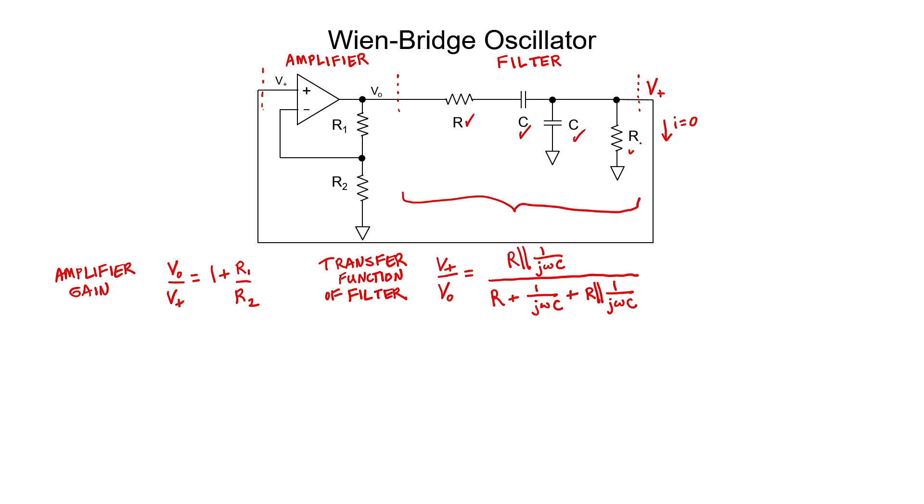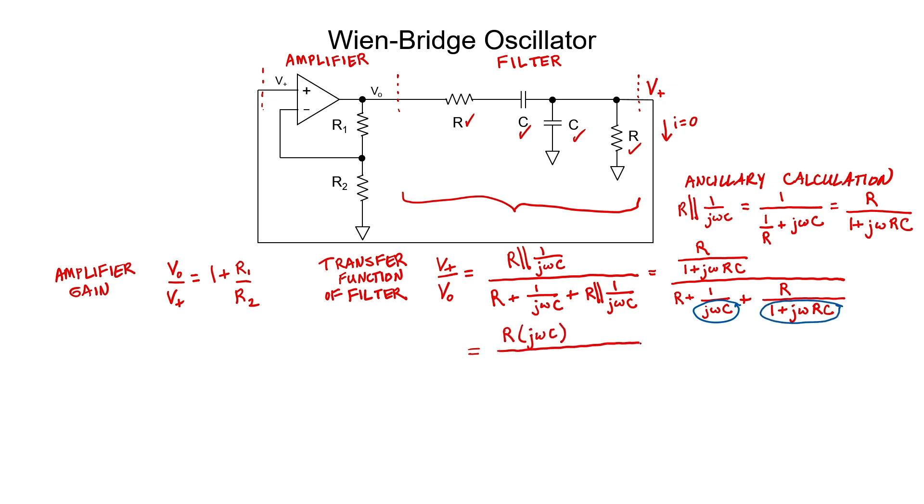In order to simplify this expression, we need to do an ancillary calculation. I can now substitute this expression back into my transfer function. In order to get a nicer looking expression, I'm going to multiply every term by j omega c and by 1 plus j omega rc.